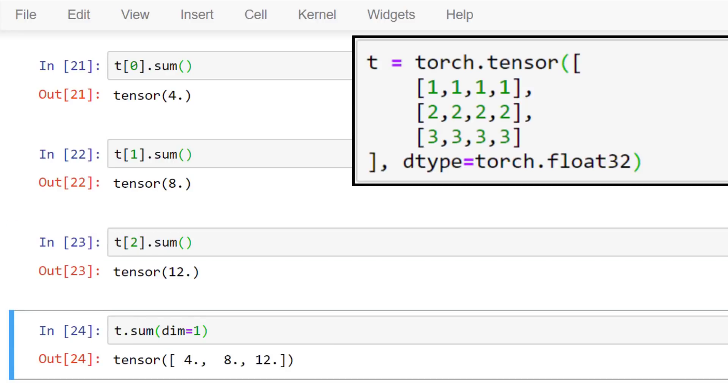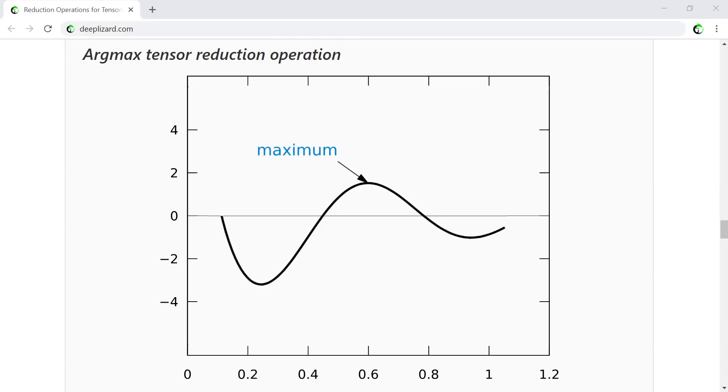The second axis in the tensor contains numbers that come in groups of four, one for each element of the first axis. Since we have three groups of four numbers we get three sums. This may take some time to sink in. Don't worry, you can do it, it just takes some time and repetition. Now with this heavy lifting out of the way, let's look at a very common reduction operation used in neural network programming called argmax. Argmax is a mathematical function that tells us which argument when supplied to a function as input results in the function's max output value. So argmax tells us the index location of the maximum value inside a tensor. When we call the argmax method on a tensor, the tensor is reduced to a new tensor that contains a single index value indicating where the max value is inside the tensor.